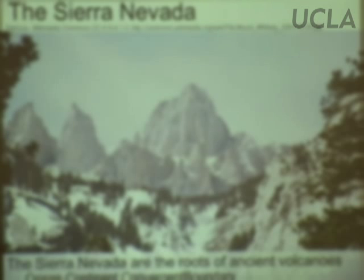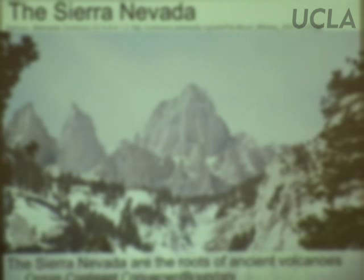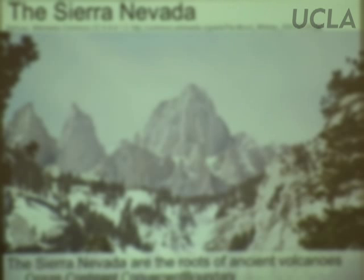If you go north in the Sierras today, you're getting closer to what used to be the surface, and far enough north you actually start to see what used to be volcanic material near the tops of the volcanoes. When you're farther south and east, like at Mount Whitney, you're looking at stuff that was several kilometers deep under the volcanoes — all the material on top has been eroded away over the past 80 to 90 million years, leaving the granites that were underneath.